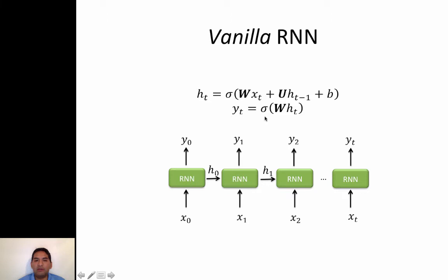To find the target, we also input the activation function h_t and multiply it by another set of parameters w. We can think of the RNN as a black box. We input a sequence at time 0, time 1, time 2, and time t, and try to predict what the target should be given that input. At every step, we depend on the current input and the previous activation function. We can unroll this loop to have a very long sequence and try to learn it.